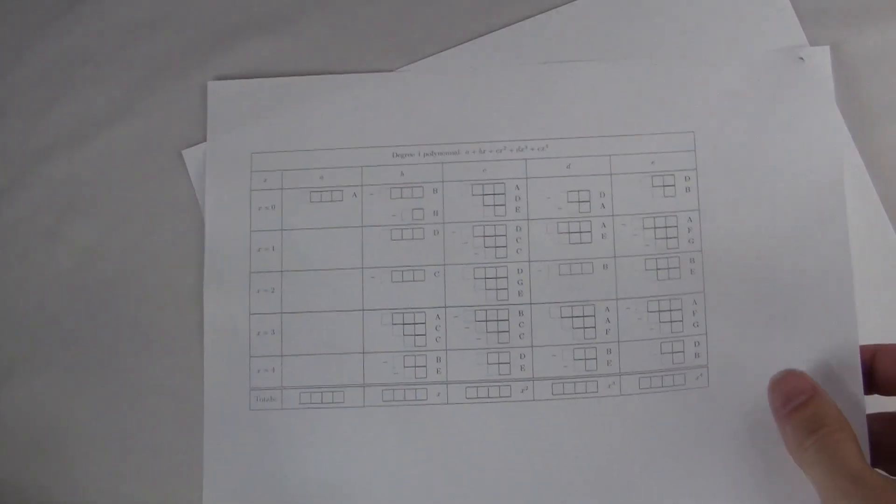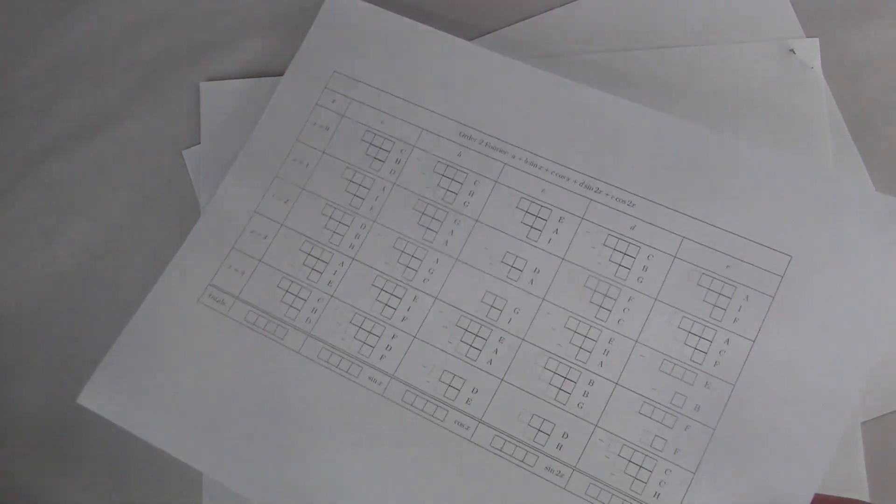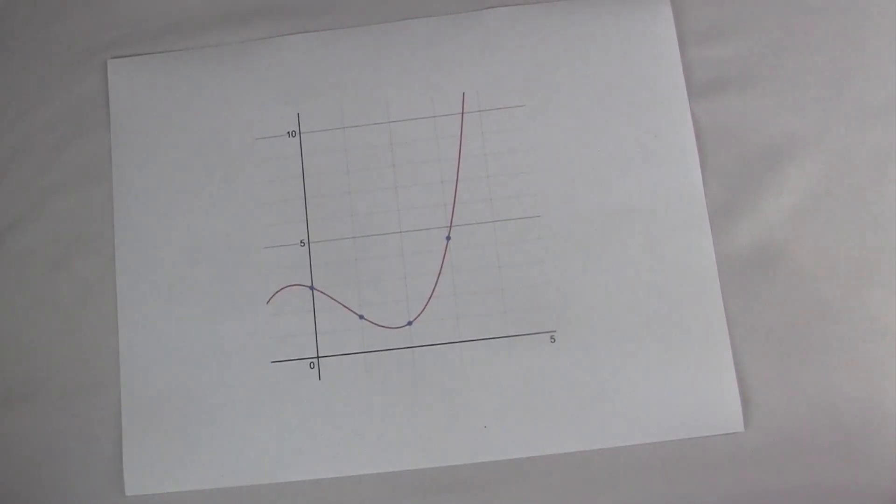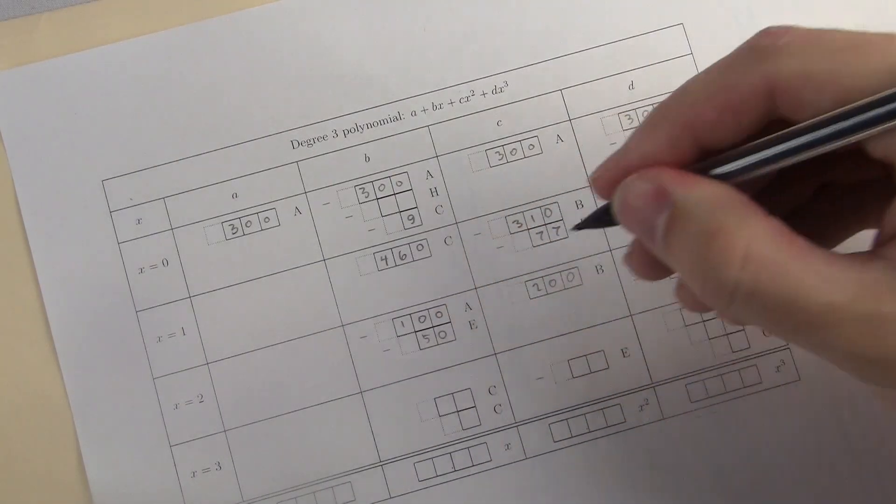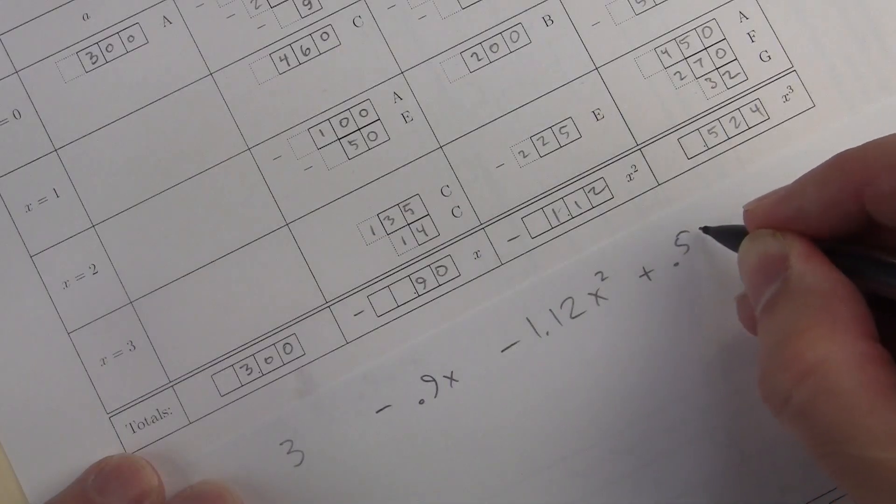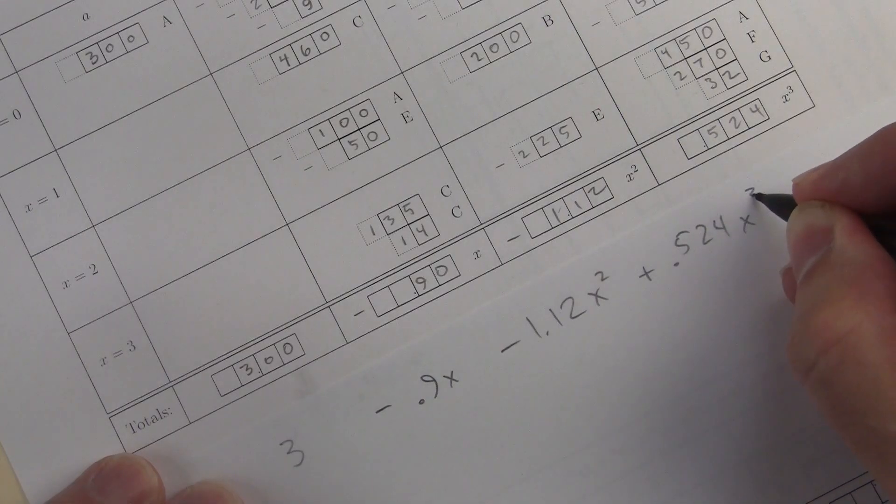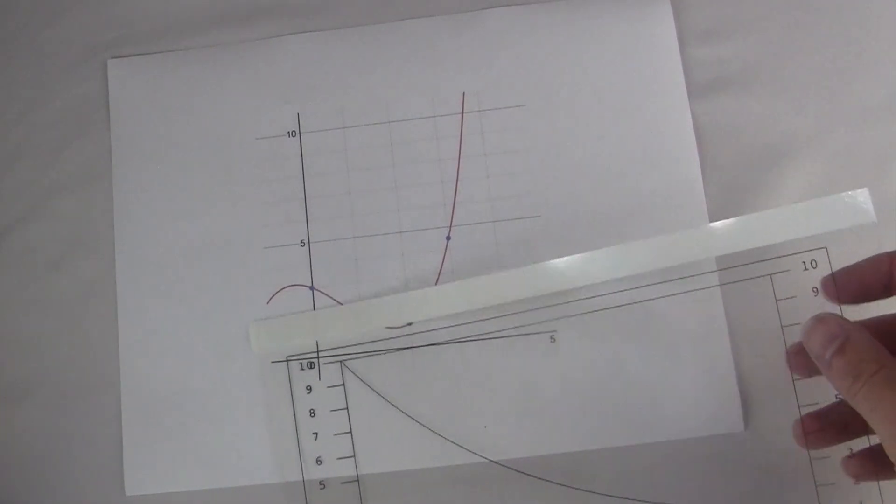It also has a collection of worksheets. You get yourself a graph of some curve. You lay these things down on top of it. You do some simple tricks on the worksheet. And the thing finds the equation of your curve. The Equimeter, it's a pretty amazing little device.